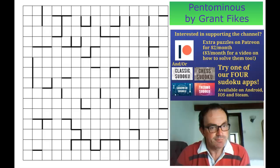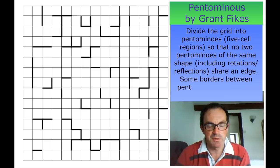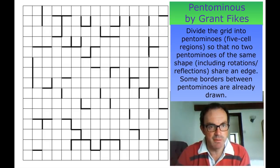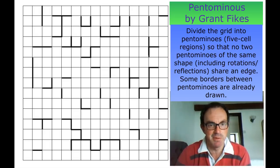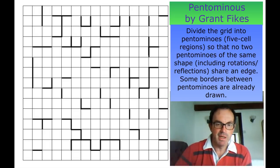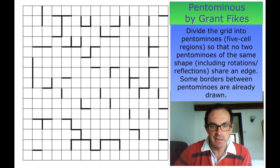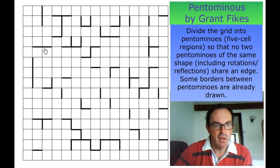Now what are the rules of pentomino puzzles? One of the beauties about this puzzle is its rule set — it's incredibly simple. Basically what we have to do is populate all of the white cells in this grid with five-cell constructed shapes.